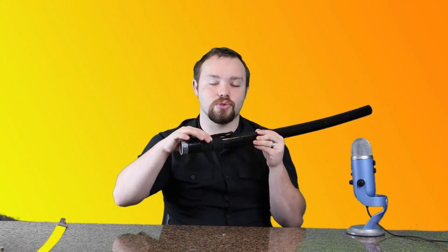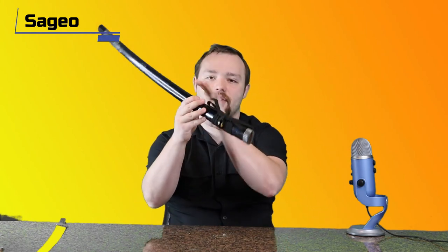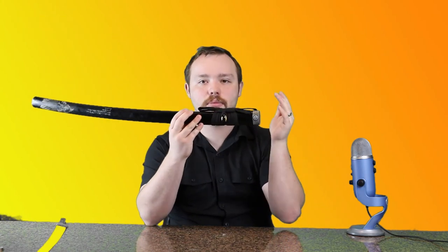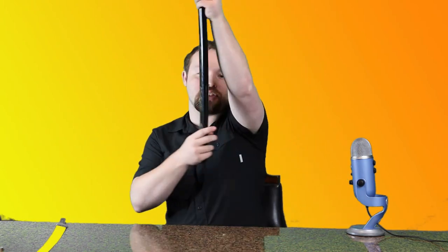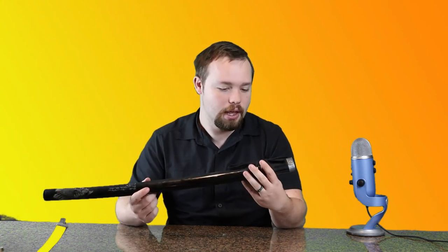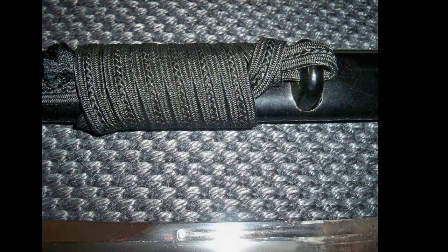It should be the same type of cord that's actually used on the handle. This is called the Sage-o. The Sage-o can have a number of different knots in it. Some are made to be specifically decorative or ornate, and then others are actually used in a functional way to attach to your side, like a samurai would when they went out into battle. The next piece right here is the Kurikata. The Kurikata is a knob that's actually attached to the scabbard. This is where the Sage-o would attach, and it would also help with attaching to your side.